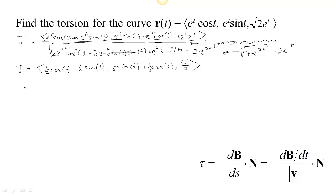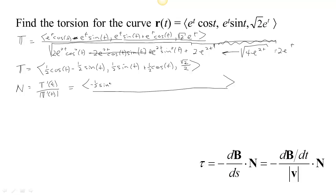There's our unit tangent. Now to find the normal, we're going to find the derivative of the unit tangent and divide by its length. So the derivative of the unit tangent is: −(1/2)sin t − (1/2)cos t for the first component, (1/2)cos t − (1/2)sin t for the second component, and the derivative of √2/2 with respect to t is 0.